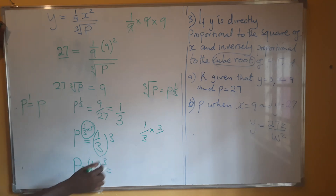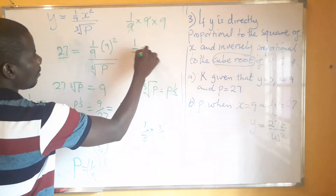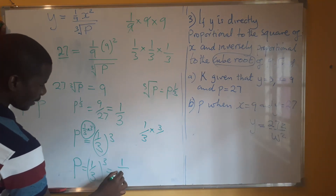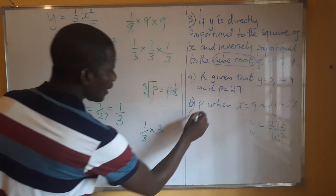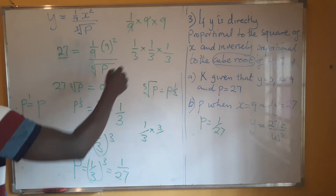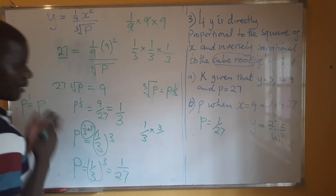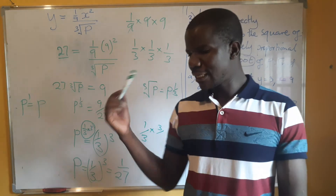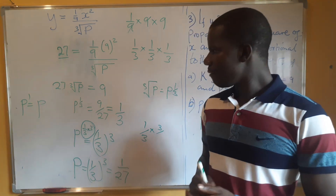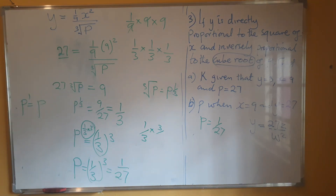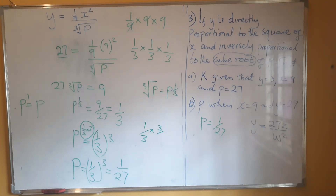So P equals (1 over 3) cubed, which equals 1 over 27. The value of P is 1 over 27. Remember, there's one question I left for you to do, and I have two more from past papers that I want you to do. Remember to subscribe to this channel and invite your friends, relatives, and children.